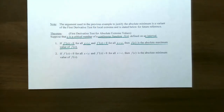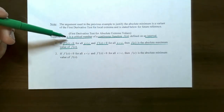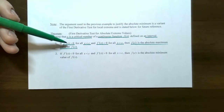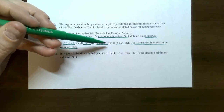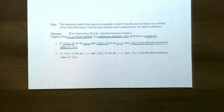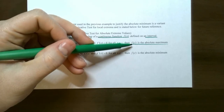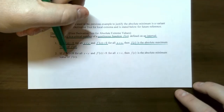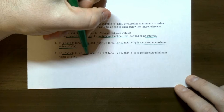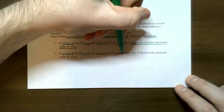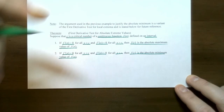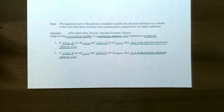So this is stating that if x equals c is the only critical number on the interval, and your derivative is positive on the left side of c and negative on the right side of c, then your critical value is not just a local max — it's an absolute maximum. The second statement is just the opposite: if the derivative is negative on the left side of c and positive on the right side of c, then f(c) is an absolute minimum. We're going to use this statement in our last few examples.